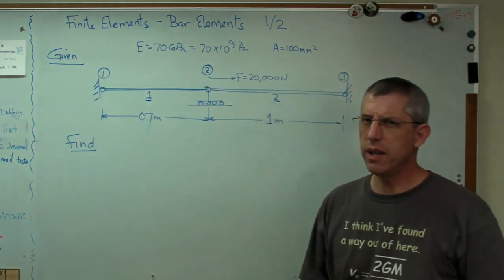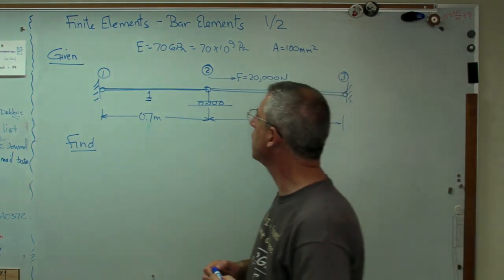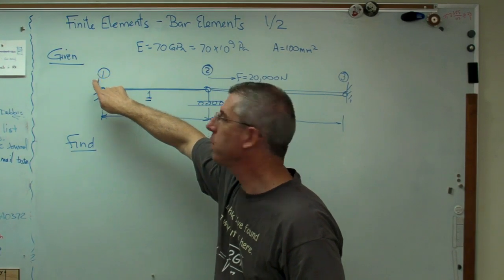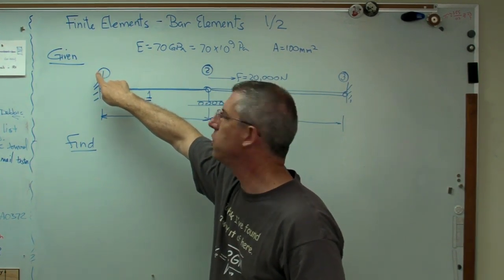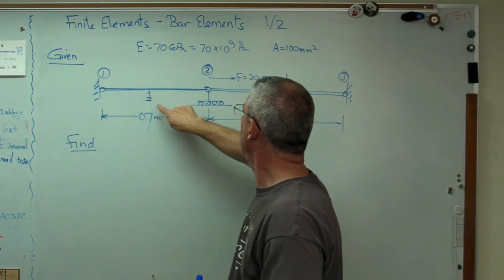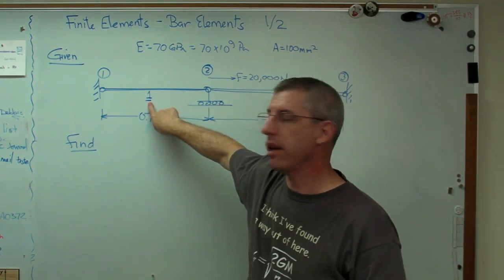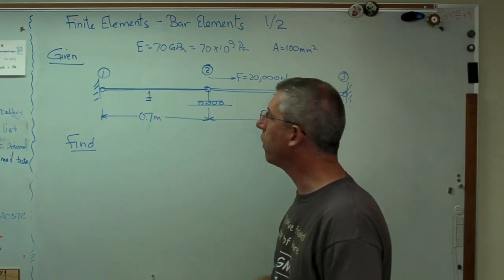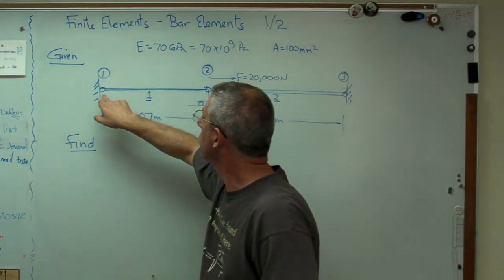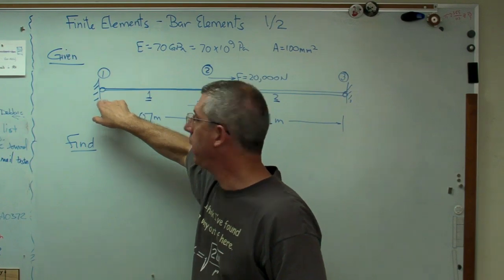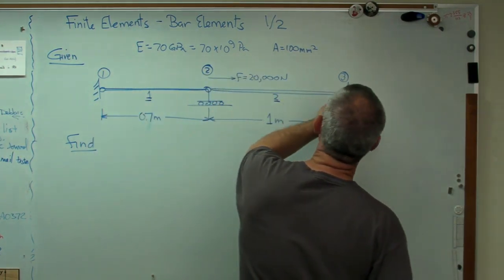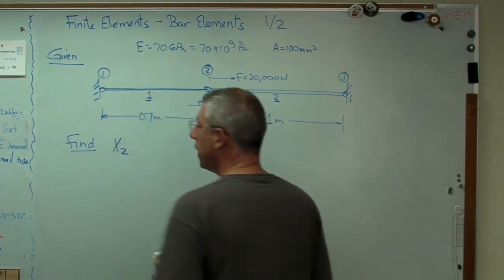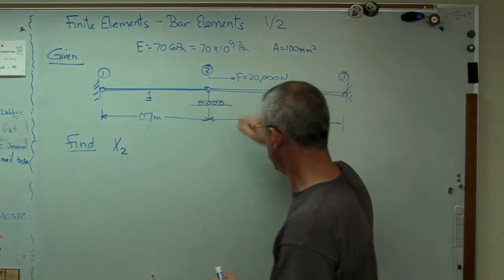There's some potential for confusion here. Grid points are going to have a number with a circle around them because it looks like a pin joint or a point, and element numbers are going to have a line under them because that's like a line. We know there's no deflection at one, so X1 is zero. We know X3 is zero. Let's find X2 - that's the only point that can actually move.